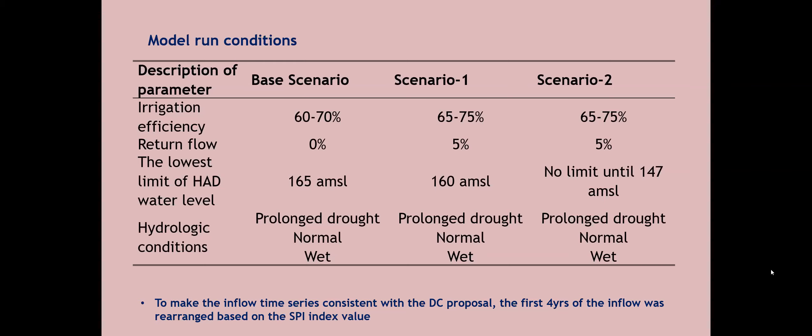The other two what-if scenarios assumed a 5% irrigation efficiency improvement and 5% return flow from irrigation schemes. Scenario 1 also modified Egypt's Aswan High Dam drawdown restriction from 165 to 160 meters above mean sea level. Scenario 2 removed any restriction on Aswan High Dam water level maintenance entirely.